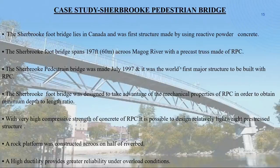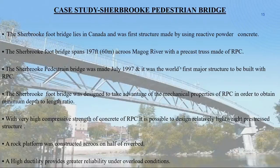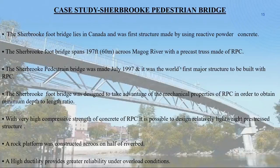Now I will discuss about my second case study on the Sherbrooke Pedestrian Bridge. The Sherbrooke footbridge lies in Canada and was the first structure made using reactive powder concrete. It spans 197 feet, approximately 60 meters, across the Magog River with a precast truss of RPC. The bridge was constructed in July 1997 and was the world's first major structure built with RPC. It was designed to take advantage of the mechanical properties of RPC in order to obtain the minimum depth-to-length ratio. With very high compressive strength, it is possible to design a relatively lightweight pre-stressed structure, and a rock platform was constructed across one half of the riverbed.